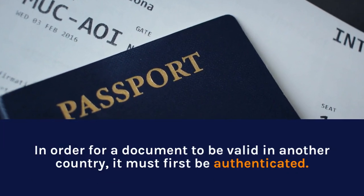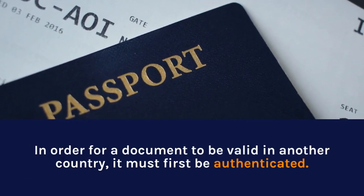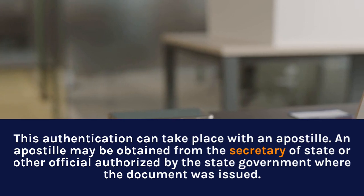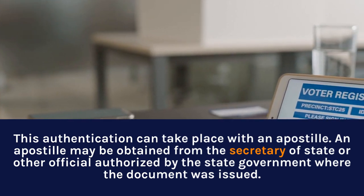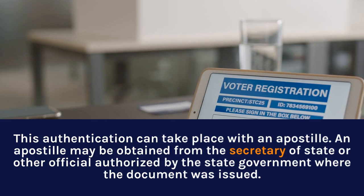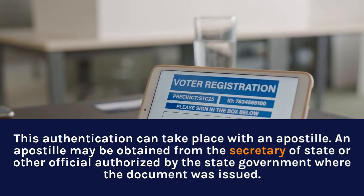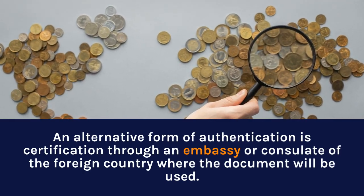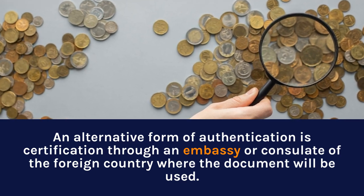In order for a document to be valid in another country, it must first be authenticated. This authentication can take place with an apostille. An apostille may be obtained from the Secretary of State or other official authorized by the state government where the document was issued. An alternative form of authentication is certification through an embassy or consulate of the foreign country where the document will be used.